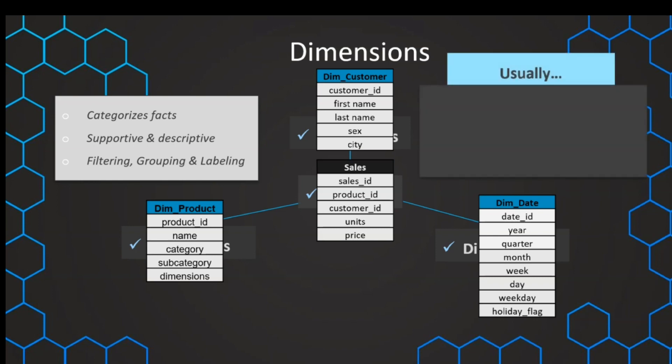To make the distinction between dimension and fact easier, here are some common characteristics of dimensions. As we've learned, fact tables are aggregatable and therefore numerical.